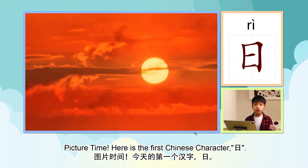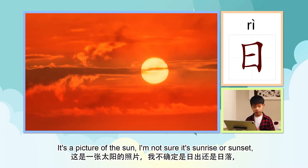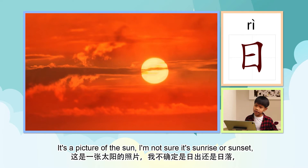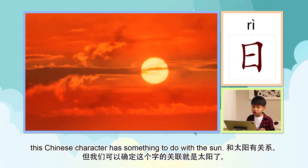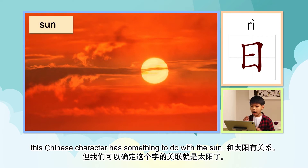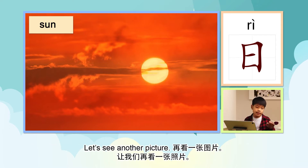Here is the first Chinese character, 日. It's a picture of the sun. I'm not sure if it's sunrise or sunset — sometimes they look the same. But one thing we could be sure of is that this Chinese character has something to do with the sun. 和太阳有关系。